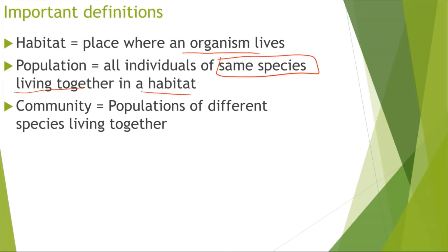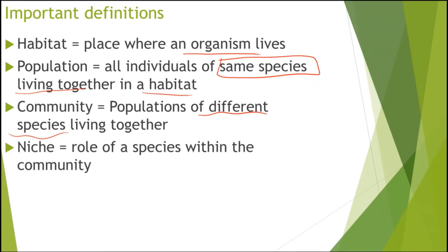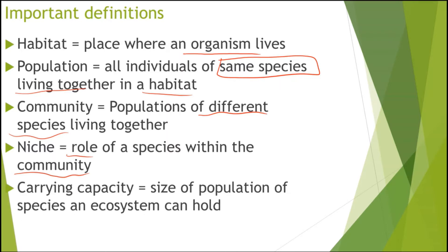This is different from a community, which is populations of different species living together. So this time we can have multiple different species — monkeys, rats, lions, tigers — all in one habitat, and they would be considered part of the community. Next we have the niche, which is basically the role of a species within the community — what it eats, where it lives, what it does. Finally, carrying capacity is the size of population of a species an ecosystem can hold.